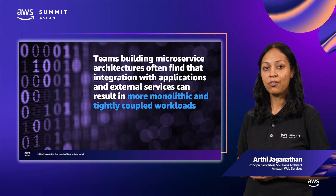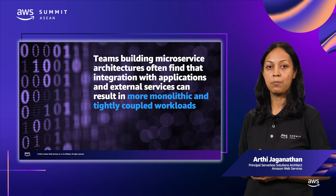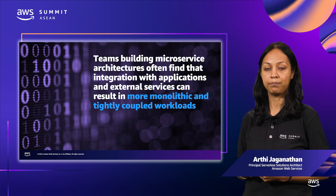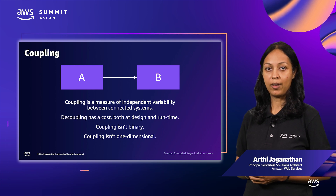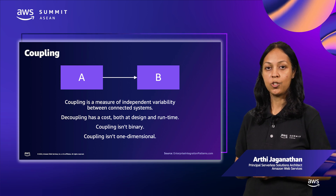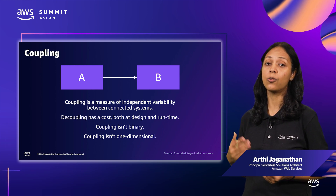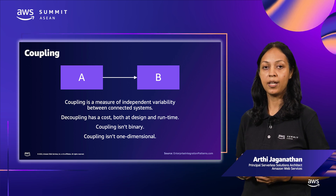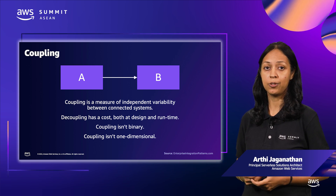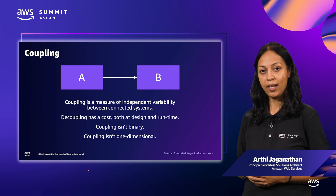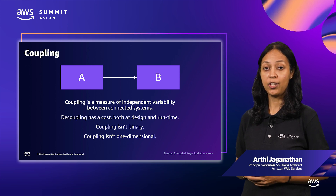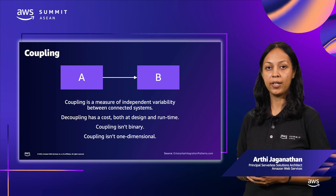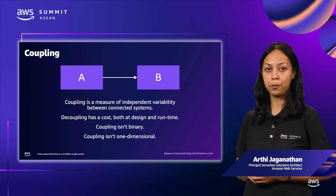This degree of dependence between services is referred to as coupling. In this diagram, if a change in system A also causes system B to change, then A and B are tightly coupled. But if A and B can change independently and still continue to communicate with each other, they are decoupled.